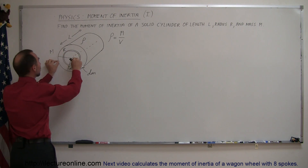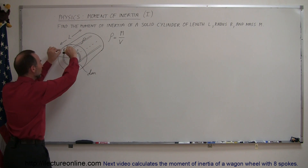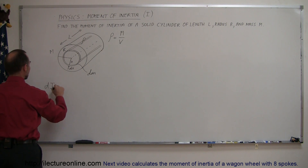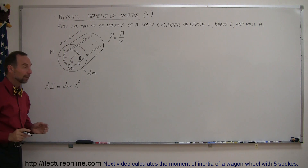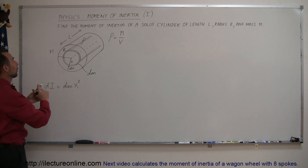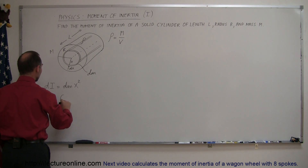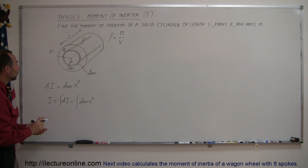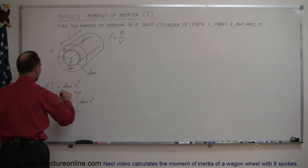We're going to find the moment of inertia of that thin little shell, which runs all the way through the length of the cylinder. The moment of inertia dI is equal to dm times x squared, the distance from the center of rotation. To find the moment of inertia of the entire cylinder, we integrate all the dI's: I equals the integral of dm times x squared, from x equals 0 to x equals R.